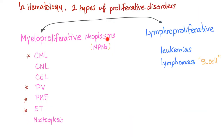Myeloproliferative neoplasms include CML, CNL, CEL, PV (polycythemia vera), primary myelofibrosis, and essential thrombocytosis. We have talked about CML, polycythemia vera, and essential thrombocytosis before. Today let's talk about primary myelofibrosis.